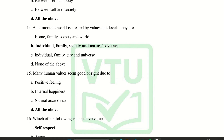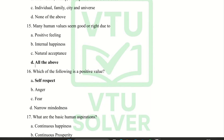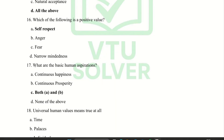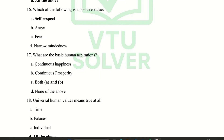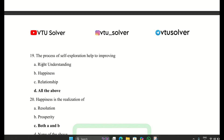Next question: many human values seem good or right due to all of the above. Which of the following is a positive value? Self-respect. What are the basic human aspirations? Both A and B — A is continuous happiness and B is continuous prosperity. Next question: universal human values means true at all — all of the above.